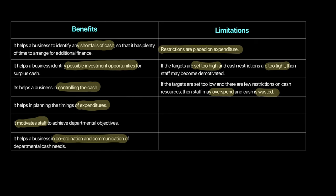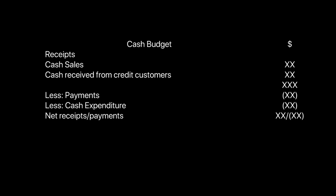Now, how do we draw up a simple cash budget? For any month, we start off with our receipts. Under receipts, you write all receipts — cash sales receipts and cash received from credit customers. Remember, cash sales will be received in the same month, but credit customers might pay one or two months later. Any other receipts are added to get your total receipts. From these receipts, we subtract all payments and cash expenditures — payments to suppliers, salaries, overheads, loan interest expenses, and any drawings made by partners. This gives you the closing net receipts or payments for that month.